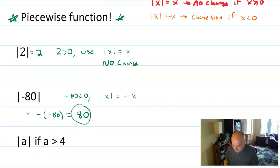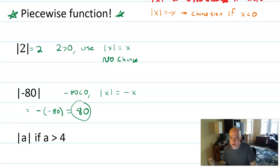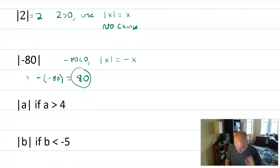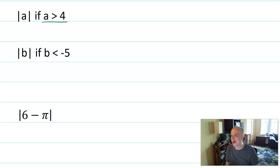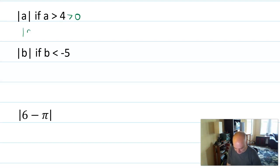Now, taking the absolute values of numbers — that's easy. Where things usually trip people up is when we're working with variables, irrational numbers, or other expressions where you can't just look at it. For example: absolute value of a, if a is greater than four. I don't know what a is, but I have some other rule for it. If a is greater than four, then a is definitely greater than zero, so the absolute value of a will equal a — using that piecewise definition.